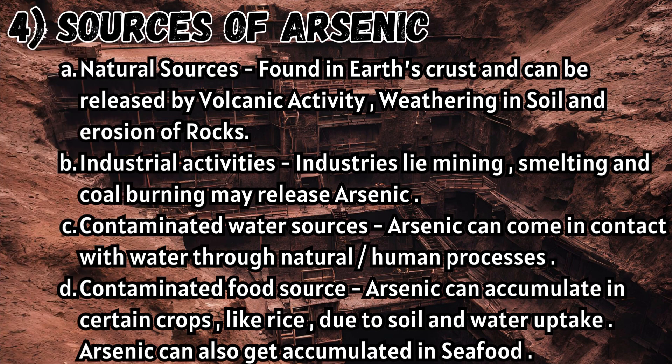Natural sources of arsenic are found in the Earth's crust and can be released by volcanic activity, weathering of soil, and erosion of rocks. Industrial activities such as mining, smelting, and coal burning may also release arsenic. Arsenic can come into contact with water through natural and human processes, and can accumulate in certain crops like rice due to soil and water uptake, as well as in seafood.